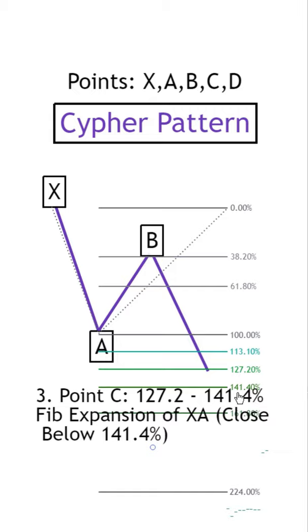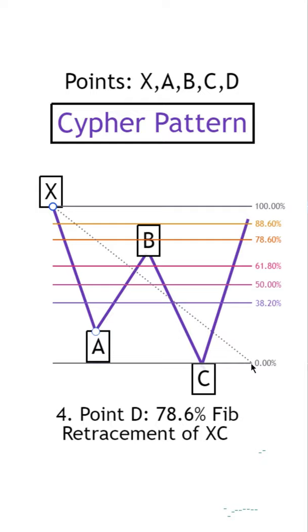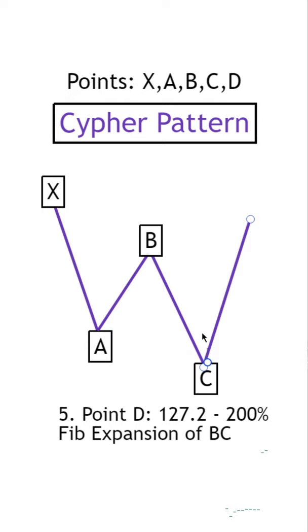And with point D, there are two steps. The first one being a Fibonacci Retracement of move X to C, where it needs to reach the 78.6 region. This point also needs a Fibonacci Expansion of move B to C, where it lands between the 127.2 and the 200 level.